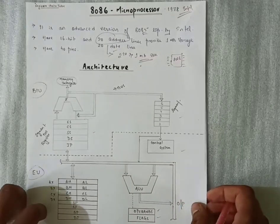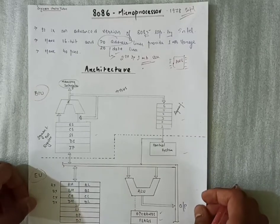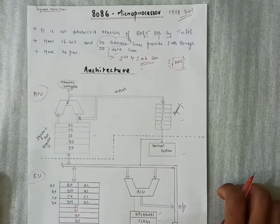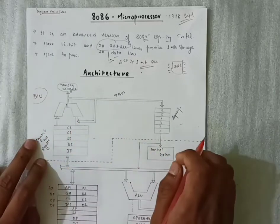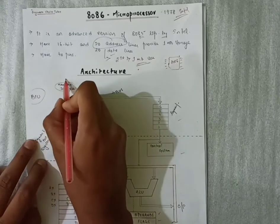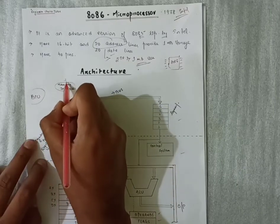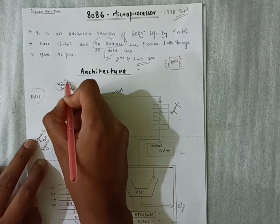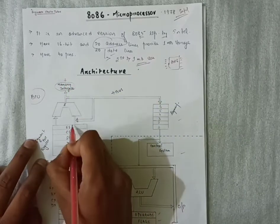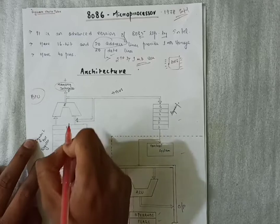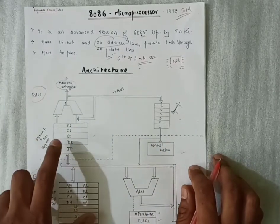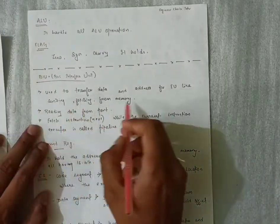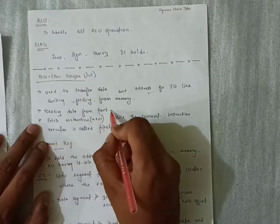Coming towards the BIU — the Bus Interface Unit — it takes care of all data and address transfers from the bus. First, our memory is here. Whatever execution we want to perform, it will take data from memory and store it in the registers. There are different segments in these registers. We will look at the different types of registers involved one by one.